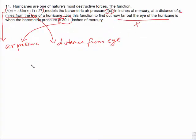You're looking for x. So what you have is 30.1 equals 0.48 ln of x plus 1 plus 27 to solve for x.